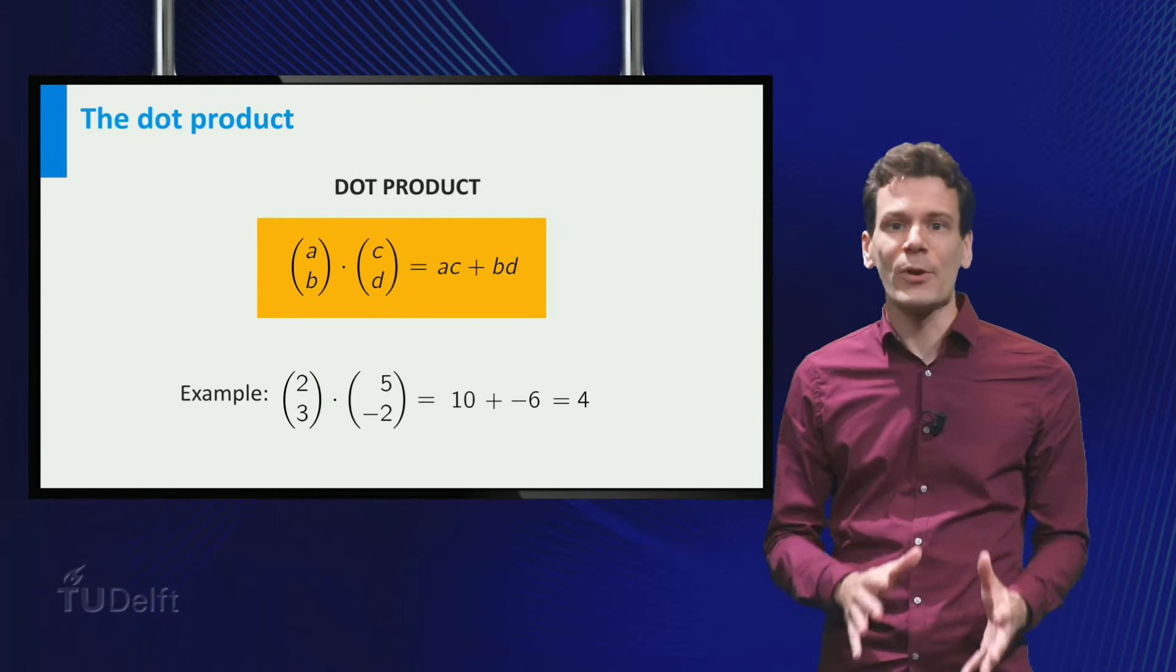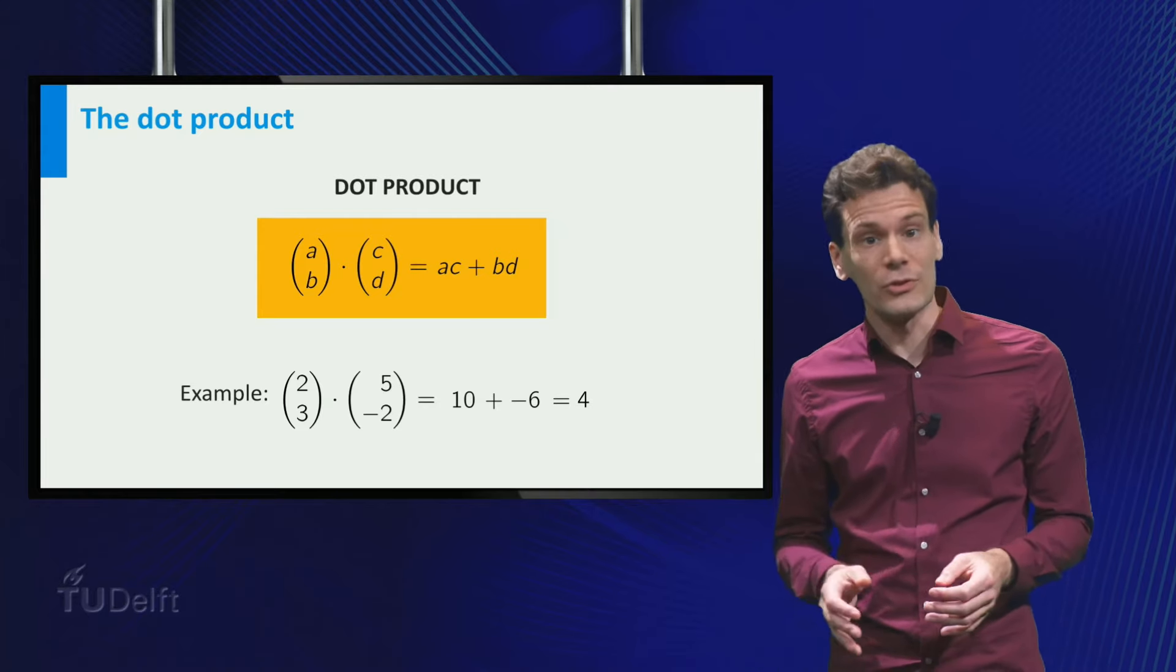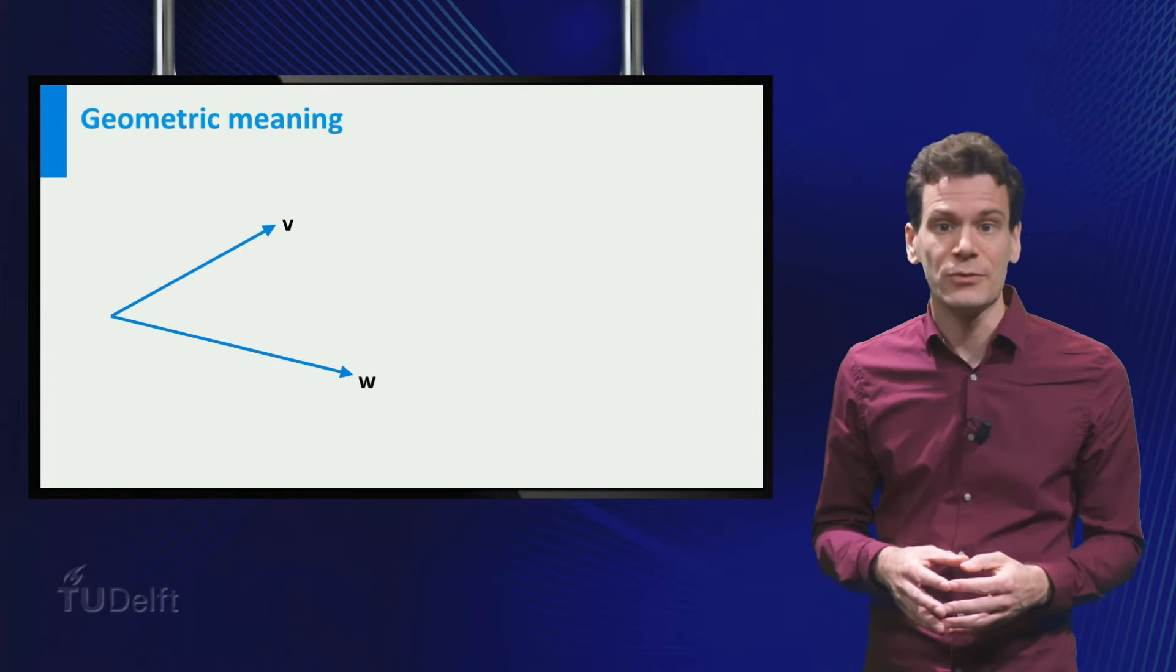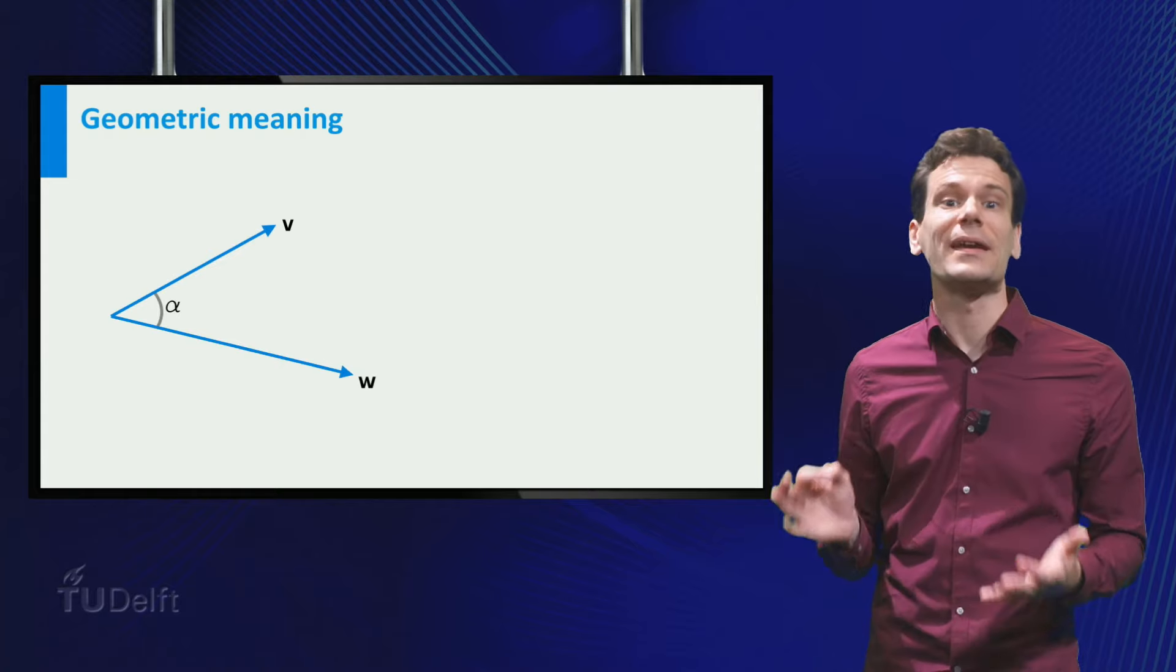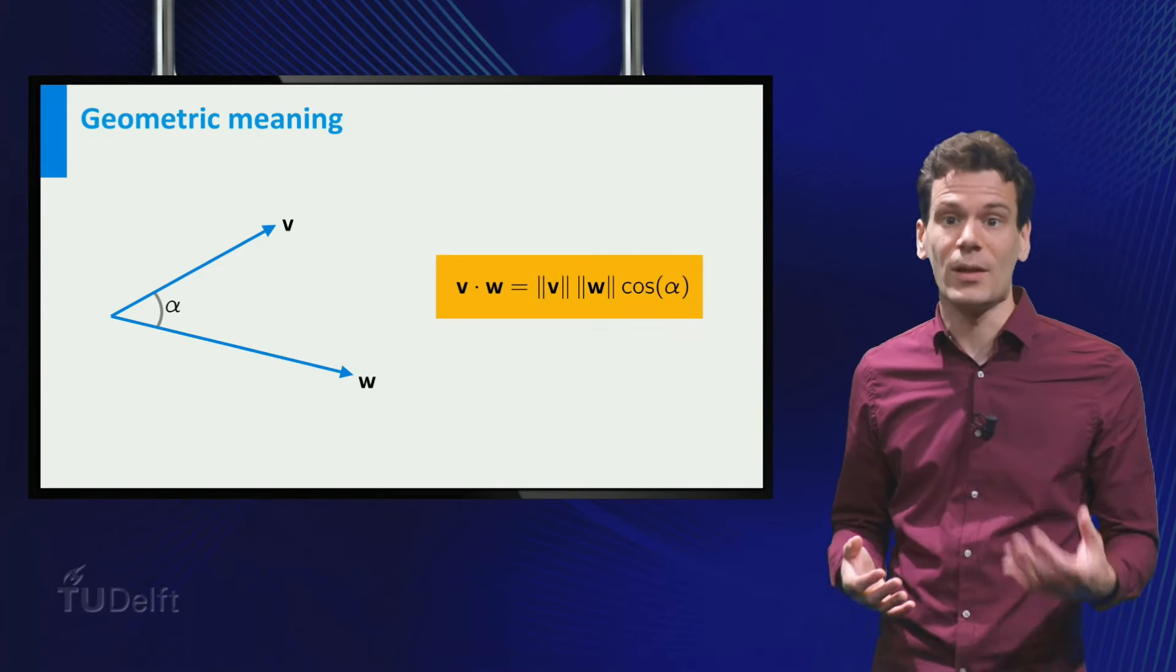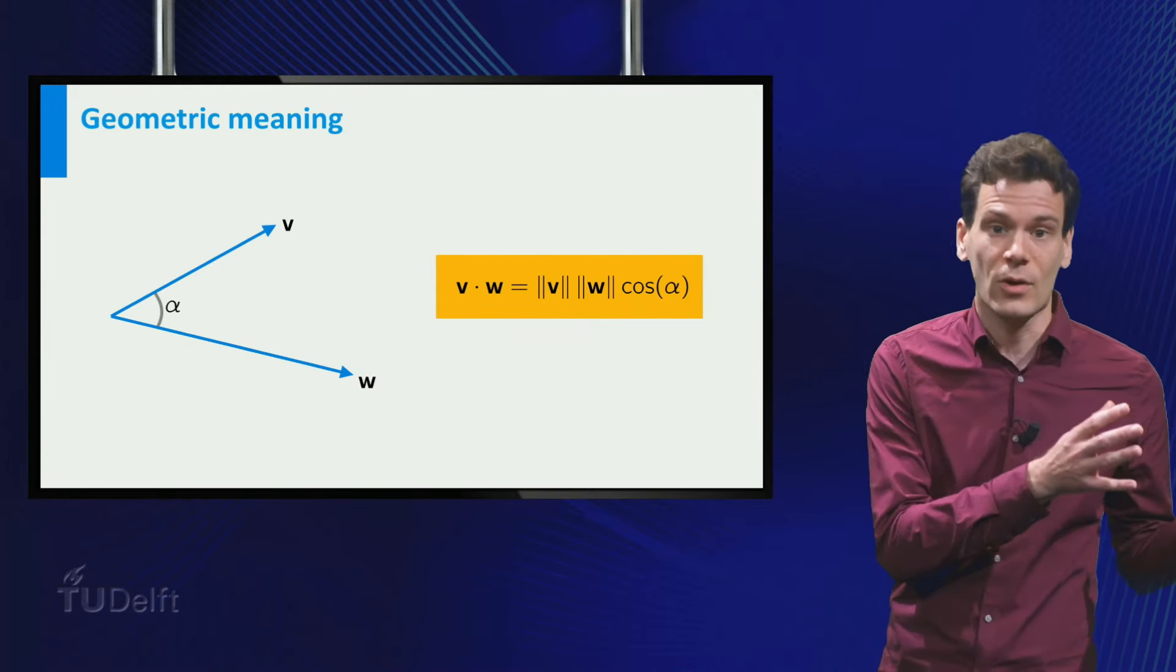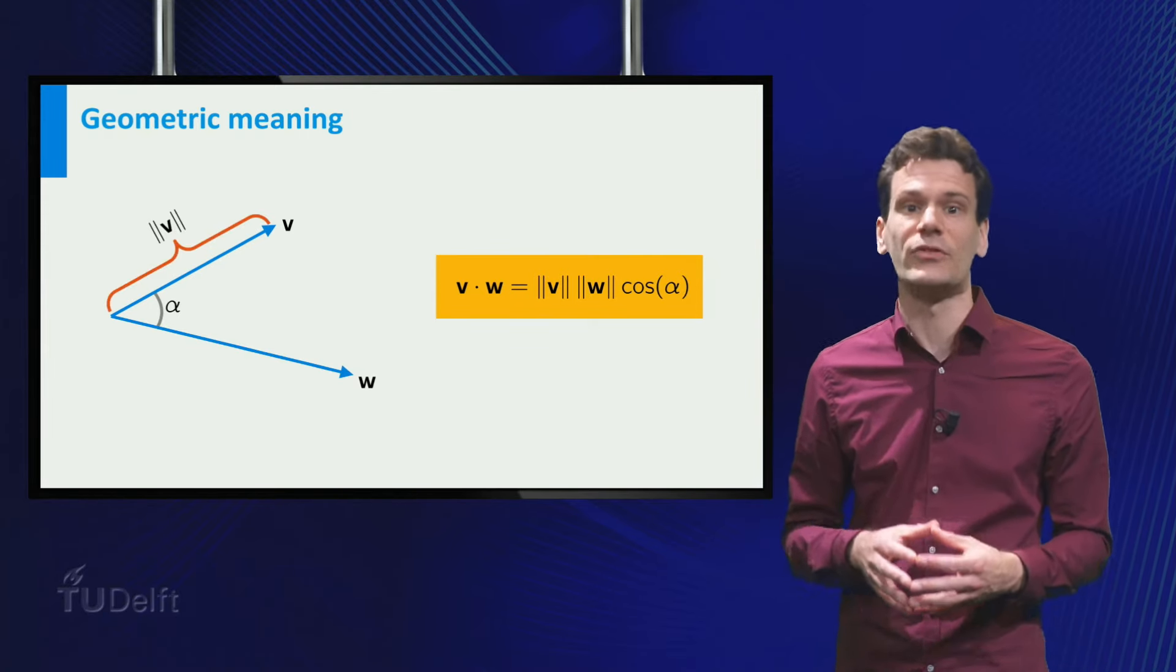I promised you that the dot product is related to geometry. How does that work? As it turns out, the following is true. Consider two vectors v and w and suppose the angle between them, as indicated in the picture, equals alpha. Then the dot product between v and w equals the norm of v times the norm of w times the cosine of alpha.